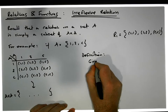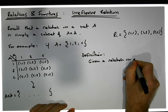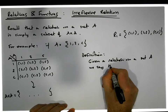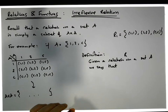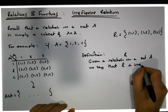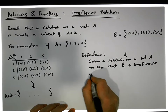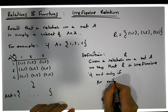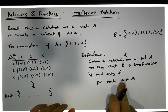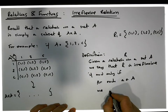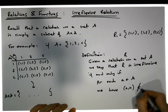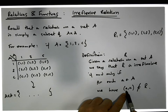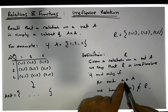Given a relation R on a set A — in other words, a subset of the cross product — we say that R is irreflexive if and only if, for each element a in the set A, the ordered pair (a, a) is not an element of the relation. So if you want to test whether a relation is irreflexive, it cannot contain any ordered pair of the form (a, a) for any element a in set A.